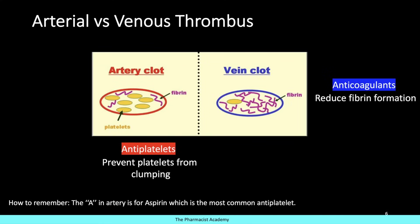An interesting fact about arterial and venous thrombi is the components of the clot. For arterial thrombus, we normally see more platelets compared to fibrin. For venous thrombus, we normally see more fibrin compared to platelets. With that, we are able to use medications that target these clots based on their components. For arterial thrombus, we use antiplatelets because there are more platelets involved. For venous thrombus, we use anticoagulants because there is more fibrin involved, and anticoagulants target different clotting factors to reduce the production of fibrin.